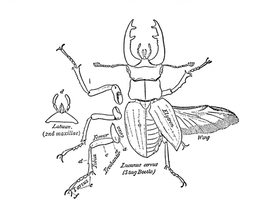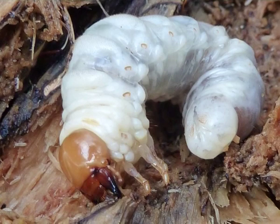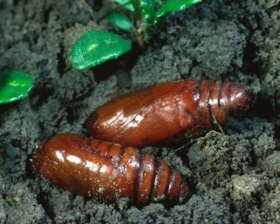Prothorax is often well developed, almost always free, and it forms with the head a distinct fore body which contrasts with the hind body, which consists of mesothorax, metathorax and the abdomen. Abdominal sternites are very heavily sclerotized and the tergites are membranous. Larvae are with or without thoracic legs but with a distinct head capsule, antenna, mouth parts and rarely with abdominal prolegs. These lack the crochets. The pupae are adecticous and exarate, and they are rarely obtect type.